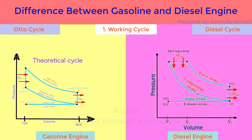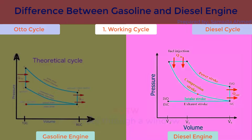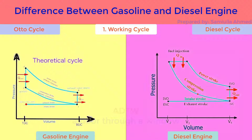Working cycle. Gasoline engine works on the Otto cycle where heat addition is at constant volume. On the other hand, diesel engine works on the diesel cycle where heat addition takes place at constant pressure.